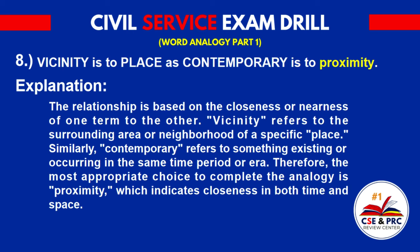Explanation: The relationship is based on the closeness or nearness of one term to the other. 'Vicinity' refers to the surrounding area or neighborhood of a specific place. Similarly, 'contemporary' refers to something existing or occurring in the same time period or era. Therefore, the most appropriate choice to complete the analogy is 'proximity,' which indicates closeness in both time and space.